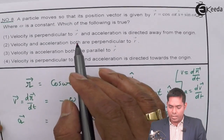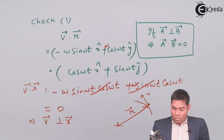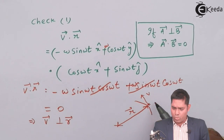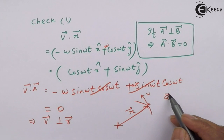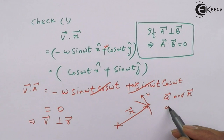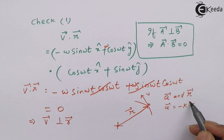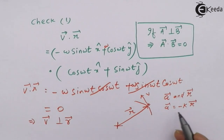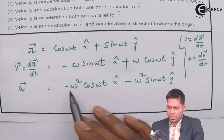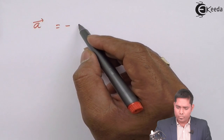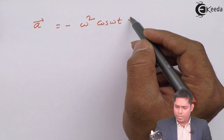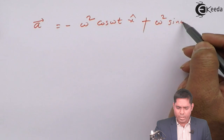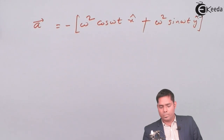Another thing to check: the option says acceleration is directed away from the origin. For circular motion, acceleration should be towards the origin. That means the acceleration vector a should have a negative sign relative to the r vector — the acceleration is directed inward, against the position vector. So a = some negative constant times r. One omega is a factor here, so one omega will be present.